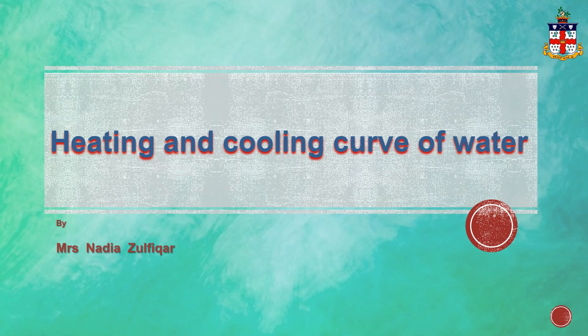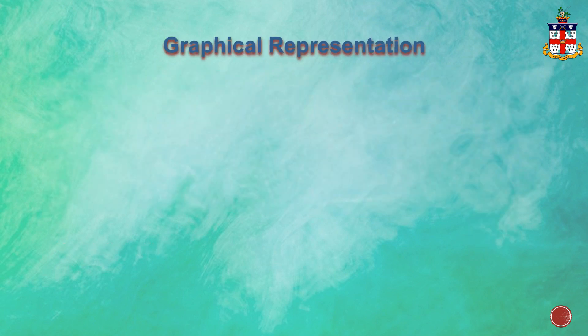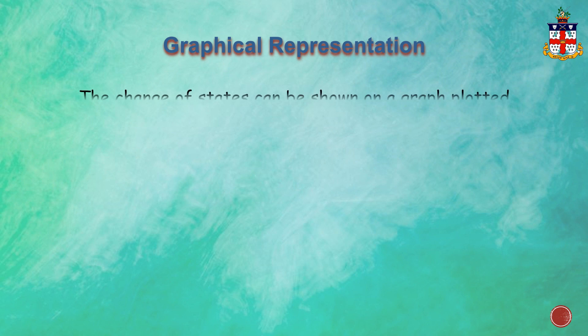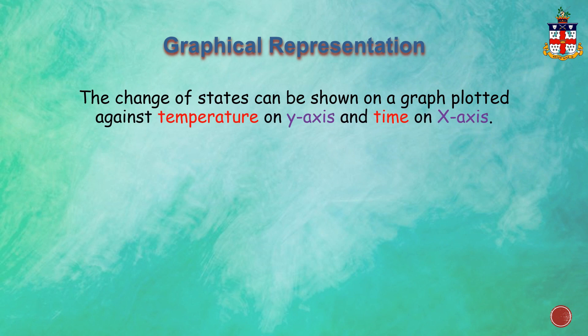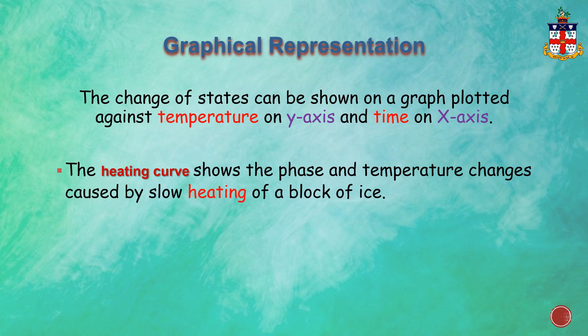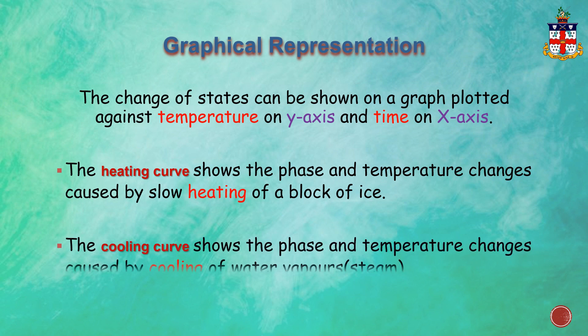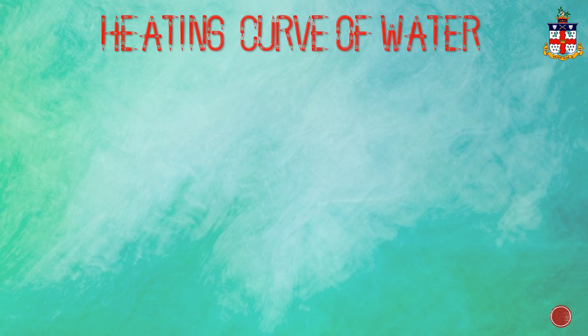The heating and cooling curve of water is basically the graphical representation of the change of states. The change of states can be shown on a graph plotted against temperature on the y-axis and time on the x-axis. The heating curve shows the phase and temperature changes caused by slow heating of a block of ice, while the cooling curve shows the phase and temperature changes caused by cooling of water vapors.